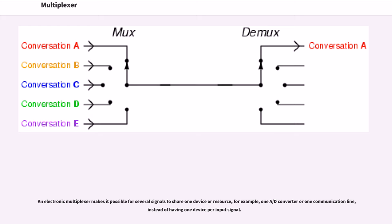An electronic multiplexer makes it possible for several signals to share one device or resource, for example, one AD converter or one communication line, instead of having one device per input signal.